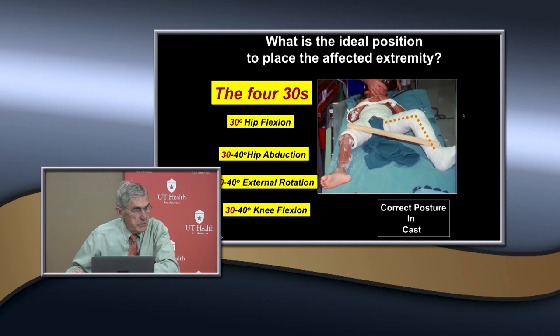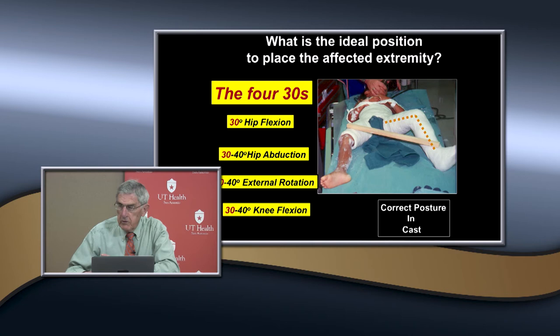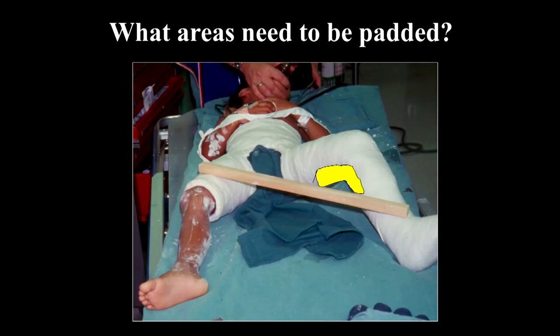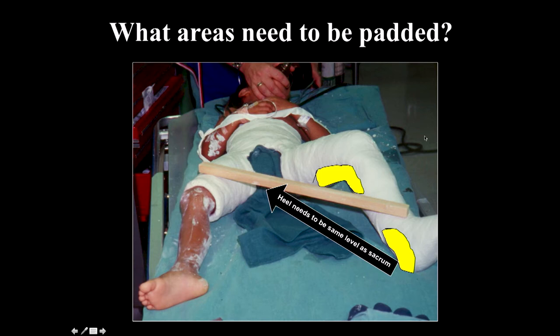I like to use plaster because I can mold it better, though some people use fiberglass. When putting on the cast, you need padding behind the heel because you're applying a little pressure. The heel needs to be at the level of the sacrum. If the heel is above that level, when they lie down it will push the back of the cast into their back and be uncomfortable. Make sure the heel is at the same level as the sacrum.